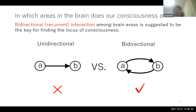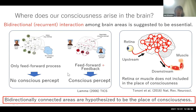In which areas in the brain does our consciousness arise? This is one of the biggest questions in neuroscience. An important notion is bidirectional processing, or in other words, recurrent processing. Previous studies have suggested that bidirectional interaction among brain areas is essential to consciousness rather than simple unidirectional interaction. For example, previous studies examining visual perception have shown that conscious percept does not arise when there is only a feedforward process, whereas it arises when there is feedback as well as a feedforward process.